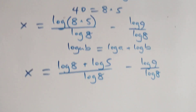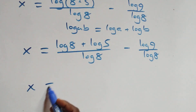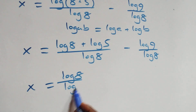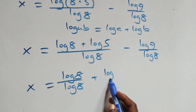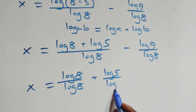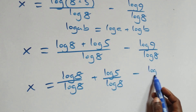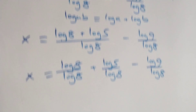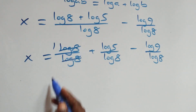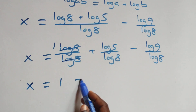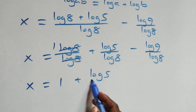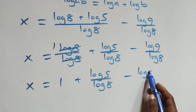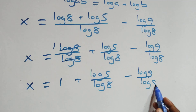Next step: we will separate this into two fractions. We have x equals log 8 over log 8 plus log 5 over log 8 minus log 9 over log 8. Then log 8 over log 8 cancels to 1, which implies x equals 1 plus log 5 over log 8 minus log 9 over log 8.